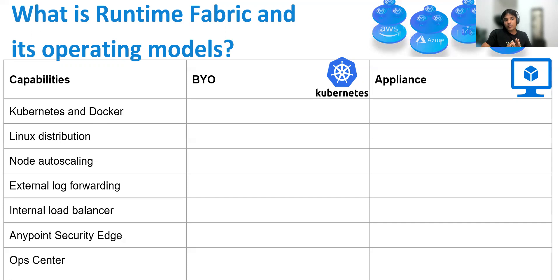The important thing is it works only with the control plane hosted by MuleSoft. It won't work with the control plane hosted by the customer, as in the case of Private Cloud Edition. So it's basically a part of the Anypoint platform and the control plane must be hosted by MuleSoft. There are two deployment options — two flavors of runtime fabric. One is the appliance model, where the MuleSoft software can be installed anywhere: a private cloud, a bare metal server, or virtual machines. The second flavor is self-managed Kubernetes, also called bring your own Kubernetes, where you install RTF on a Kubernetes cluster provided by Microsoft, Amazon, Google, and in the future, OpenShift as well.